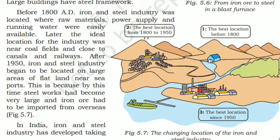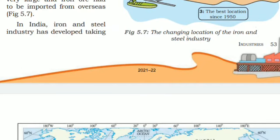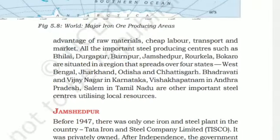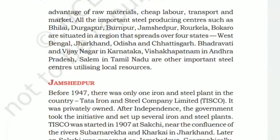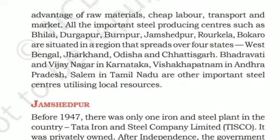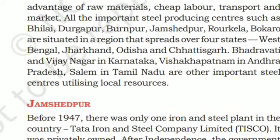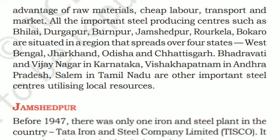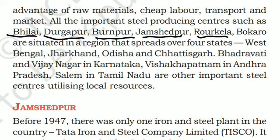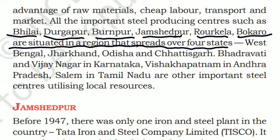In India, the iron and steel industry has developed taking advantage of raw materials, cheap labor, transport, and market. All the important steel producing centers such as Bhilai, Durgapur, Burnpur, Jamshedpur, Rourkela, and Bokaro are situated in the region that spreads over four states: West Bengal, Jharkhand, Odisha, and Chhattisgarh.